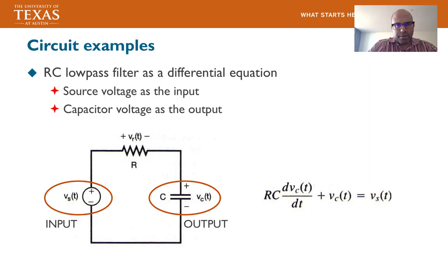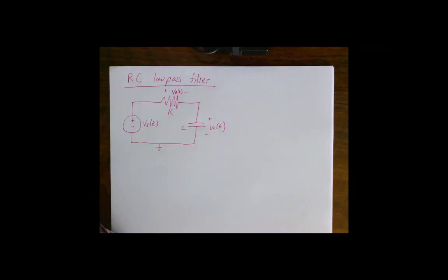Here are some circuit examples. This is the RC low-pass filter. You derived this in previous courses: the output voltage is divided among the voltage across the resistor and the voltage across the capacitor. This gives the following equation for the output voltage, the capacitance voltage, and the derivative of the capacitance voltage.